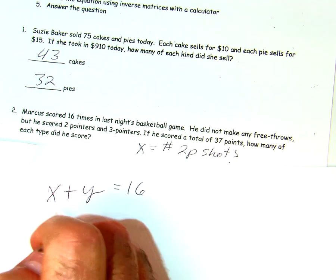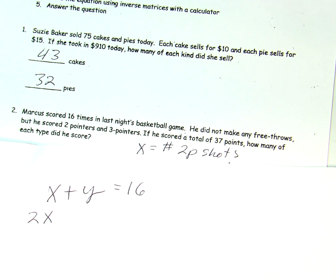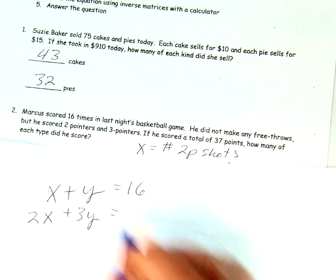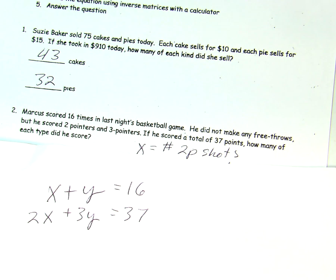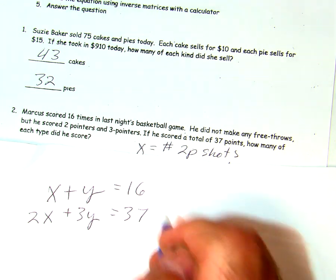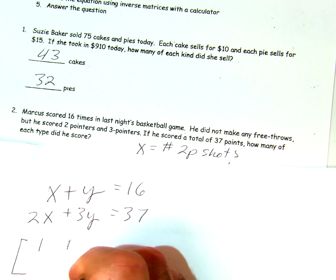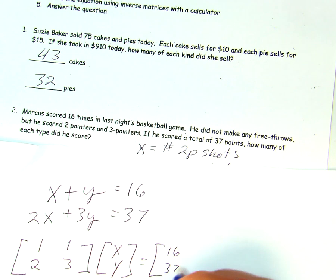Then, x is the two-point shot. So, the value, of course, is the coefficient. And the value of the three points is the coefficient. And he made a total of 37 points. So, now we have our equation that we can set up as a matrix. So, we'll have the coefficient of 1, 1, and the coefficient of 2 and 3. And, once again, x and y equals 16 and 37.